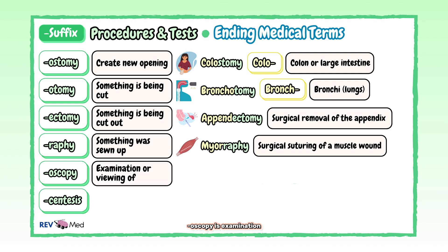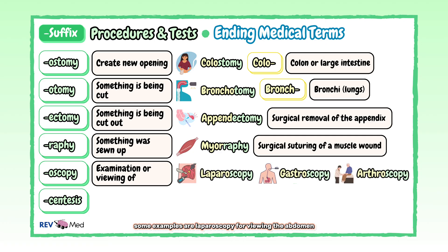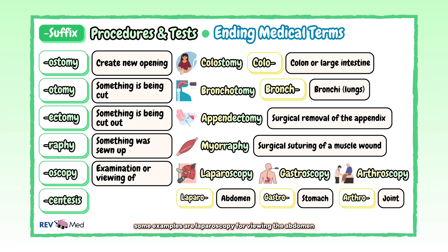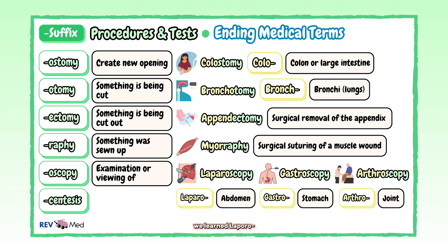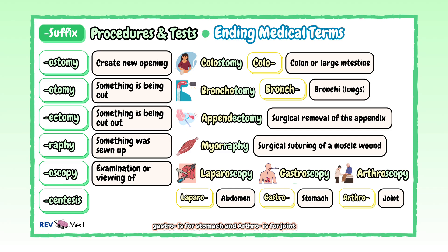"-Oscopy" is the examination or viewing of something with a scope. Some examples are laparoscopy for viewing the abdomen, gastroscopy for examining the stomach, and arthroscopy for examining the joints with a scope. We learned laparo, gastro, and arthro in our previous root words lesson. So remember: laparo is for abdomen, gastro is for stomach, and arthro is for joint.